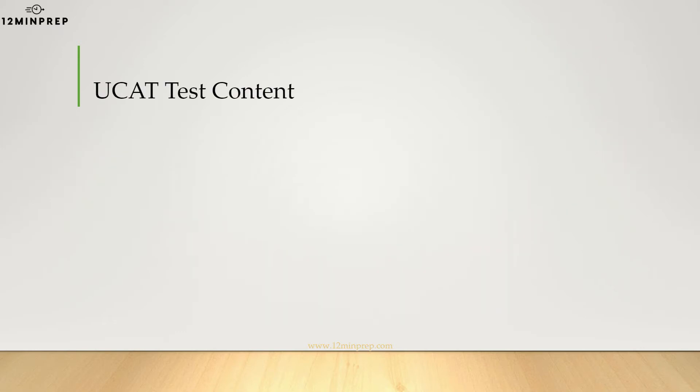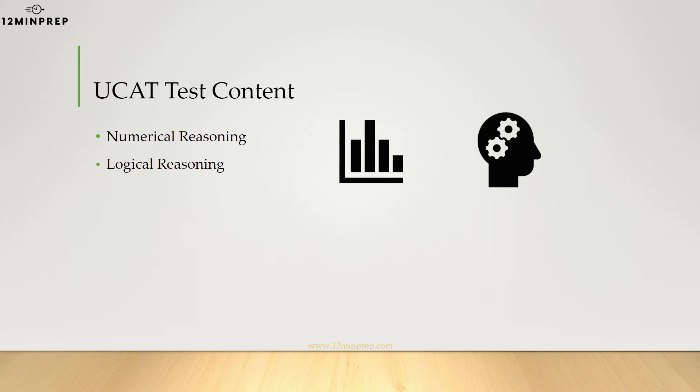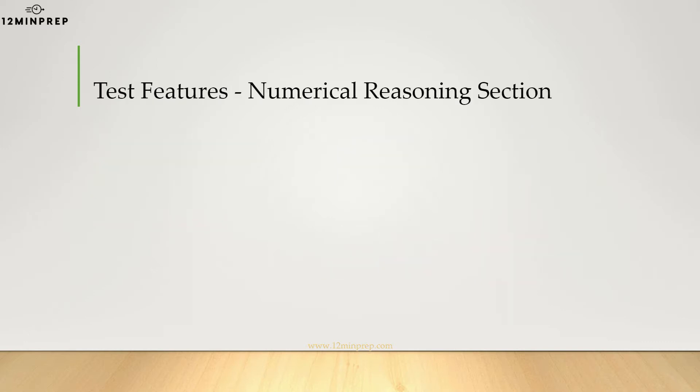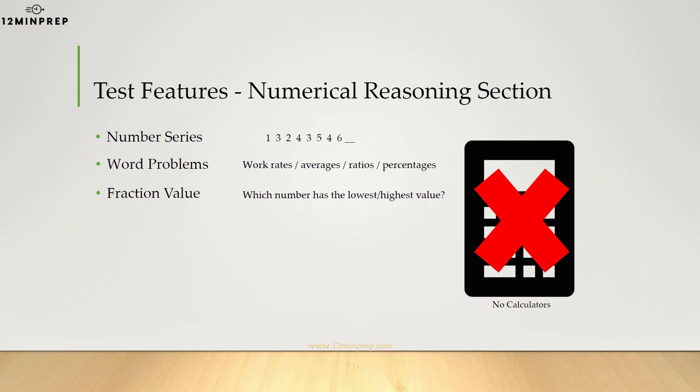The UCAT is made up of four general question types: numerical reasoning, logical reasoning, spatial and abstract reasoning, and attention to detail. Numerical reasoning questions will evaluate your ability to work with and understand numbers. Question types include number series, word problems, and fraction value. You may also be asked to interpret various graphs, tables, and other data. It is recommended that you bring scratch paper for calculations, since you will not be allowed to use a calculator.